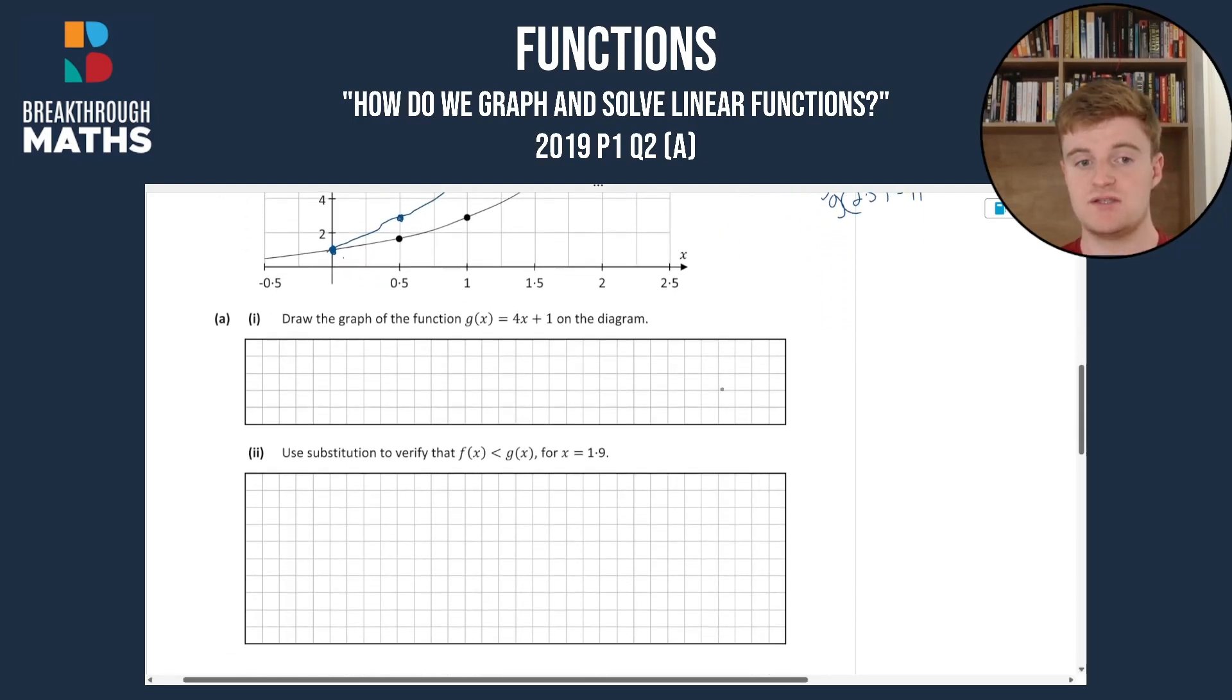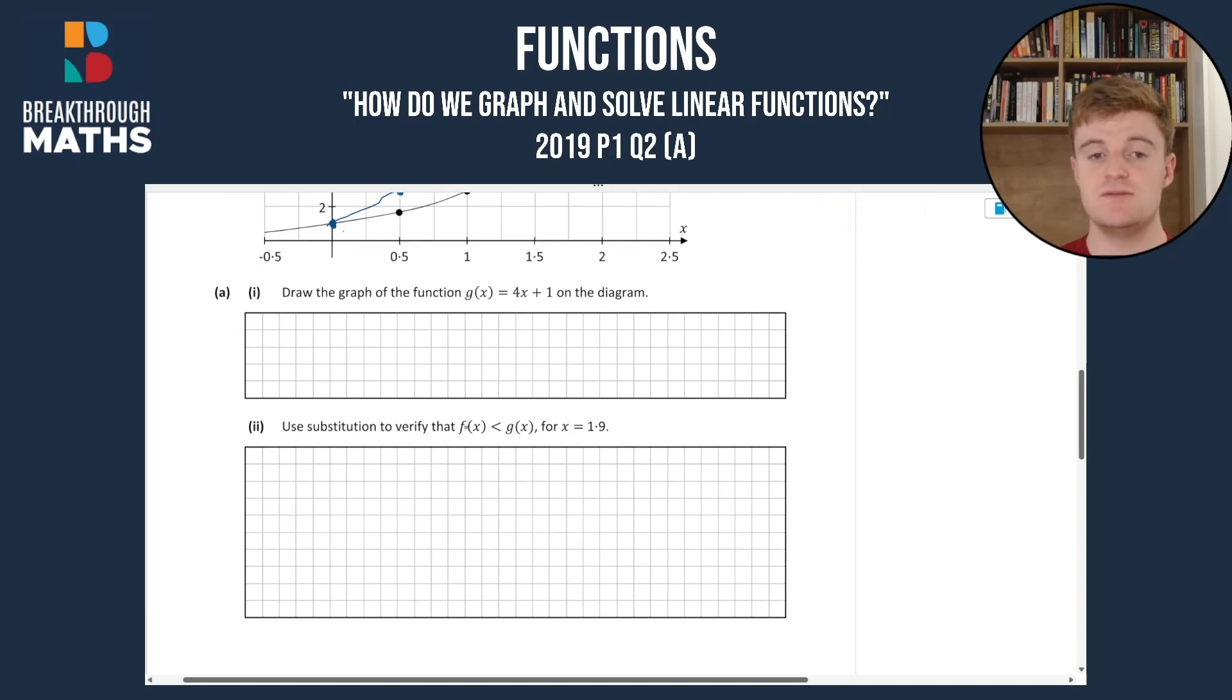So that's how you draw a graph of the function. In the second part of the question, we're asked to use substitution to verify that f(x) < g(x) for x = 1.9. So we're trying to prove that f(x), which is 3^x, is less than g(x), which is 4x + 1, for x = 1.9.